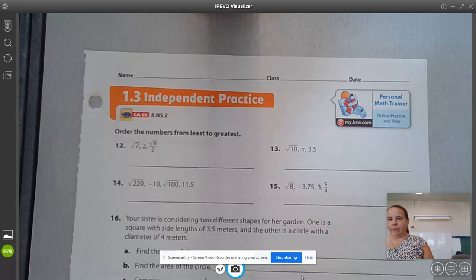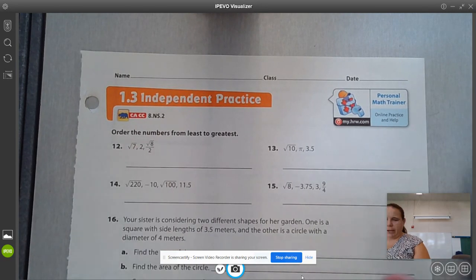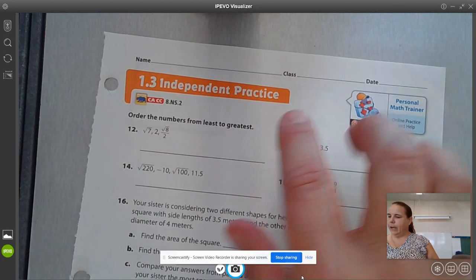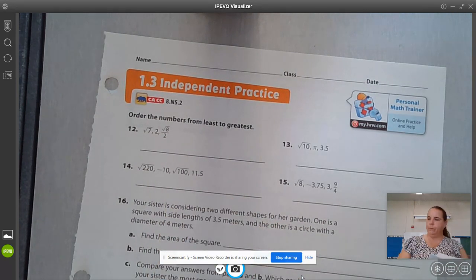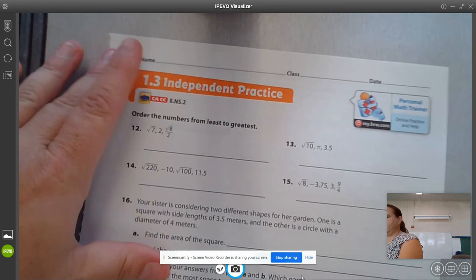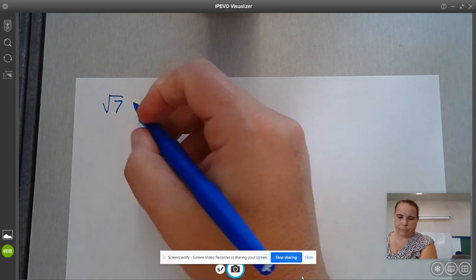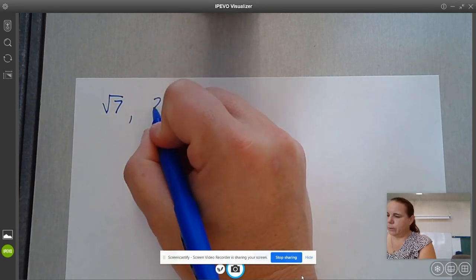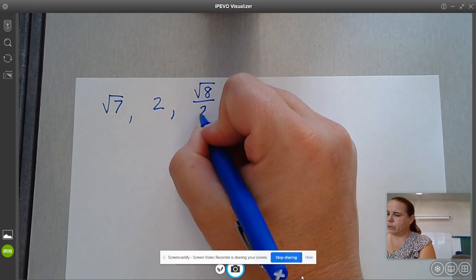I'm going to go over number 12 on page 25, and we're going to be ordering these numbers from least to greatest. The numbers are square root of 7, 2, and square root of 8 over 2.